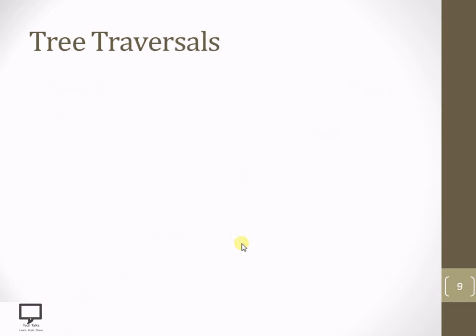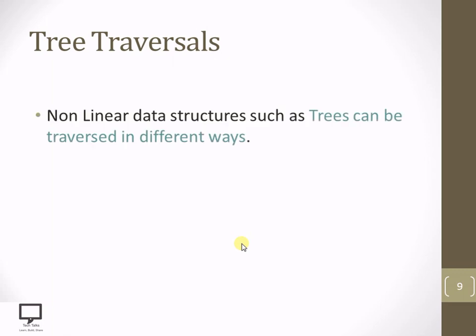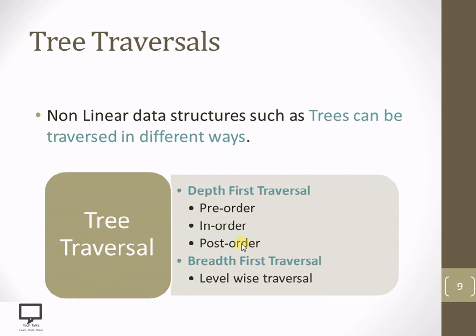But the tree is a non-linear data structure. So if it is non-linear, we can traverse the tree in different ways. There are basically two different ways: depth first search, or depth first traversal of the tree, and breadth first traversal of the tree. Within depth first traversal, there are again three ways — pre-order traversal, in-order traversal, and post-order traversal. And breadth first traversal is nothing but traversing the tree level-wise.